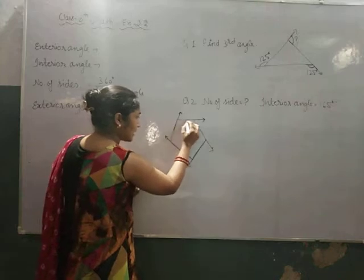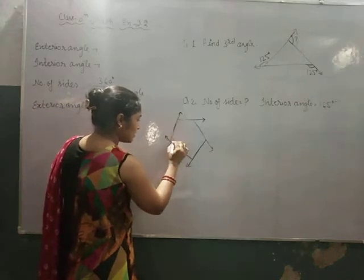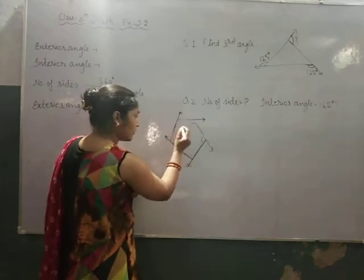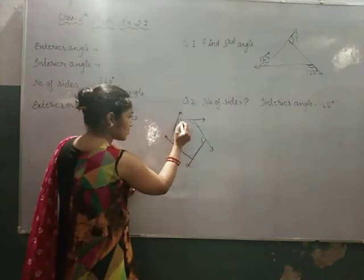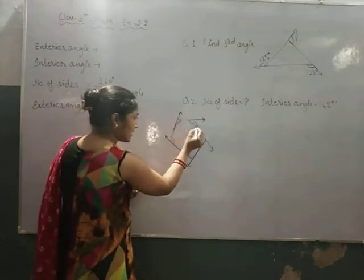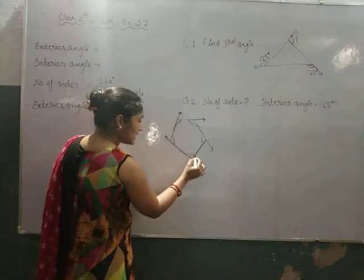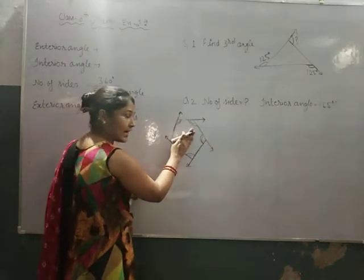Structure-ke-andar-ke-do-saare angles. One, two, three, four and five. This is called interior angle. Structure-ke-to-andar-ke angles, these are called interior angle.